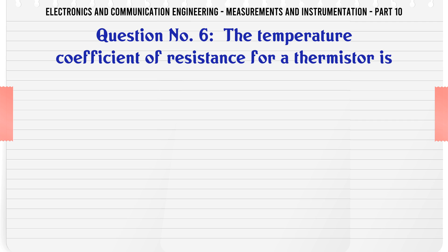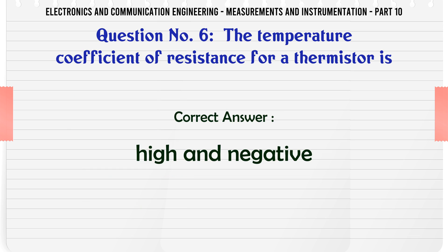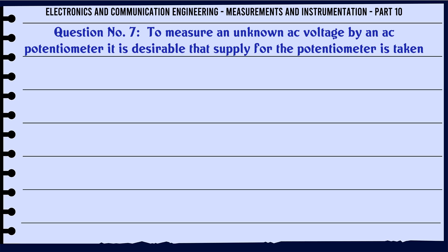The temperature coefficient of resistance for a thermistor is: A) low and negative, B) low and positive, C) high and negative, D) high and positive. The correct answer is high and negative.